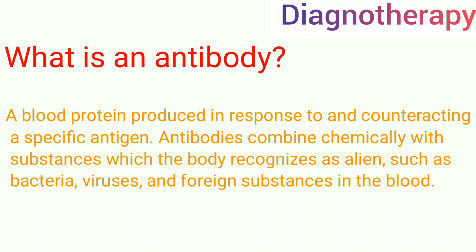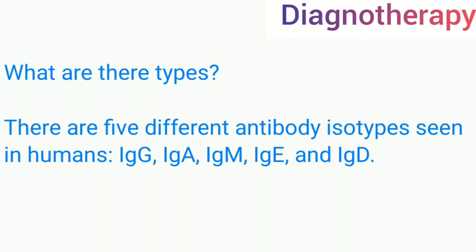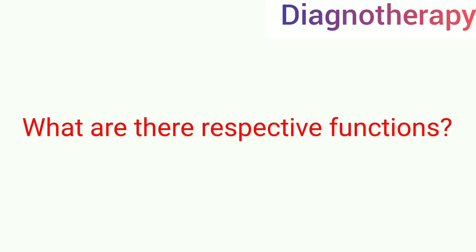After knowing what is an antibody, let's see its types. There are five different antibody isotypes seen in the body, namely IgG, IgA, IgM, IgE, and IgD. Now let us see in brief what are their respective functions.